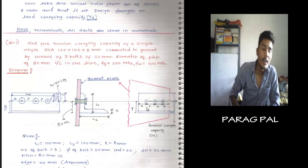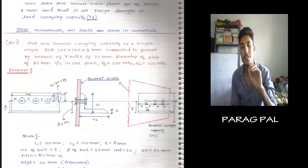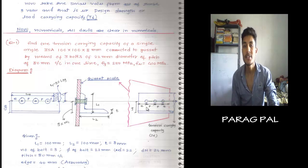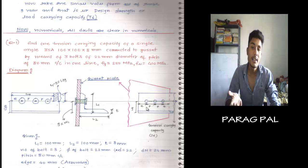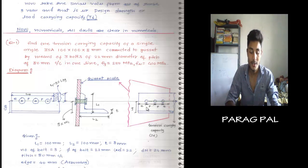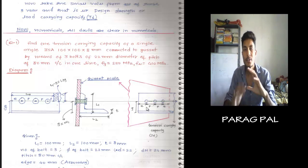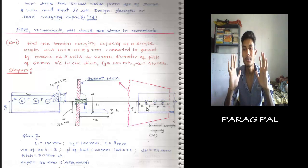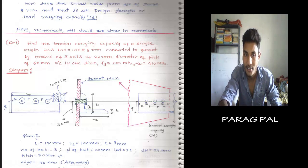In this numerical I am telling about the basics. In each and every numerical, if they tell you to find the tension carrying capacity of a single angle or double angle — double angle means placed on the same side or opposite side of the gusset plate — you have to determine the answer. Watch all the diagrams carefully, because this shows the angle connected to the gusset plate by bolts.